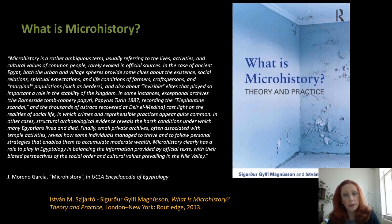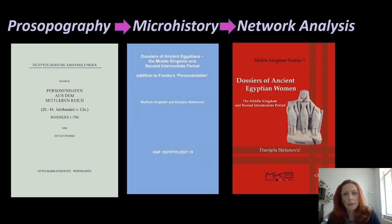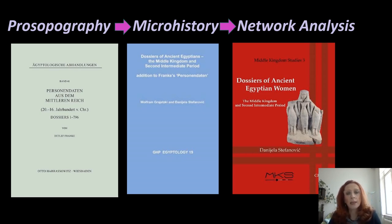Since microhistory is focused on individual lives, prosopographic data — forming the basic requirement for the manifestation of personal and social identity in a community of persons — are one of its most important elements. Prosopographic data are relational data by which individuals can be connected to each other. By evaluating and comparing all prosopographic data, the personal interrelations within a social community or network of persons can be reconstructed by means of network analysis.